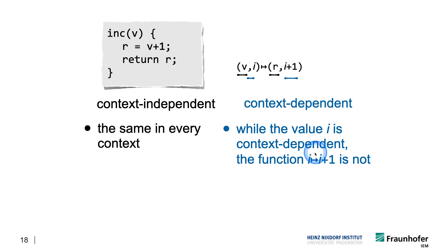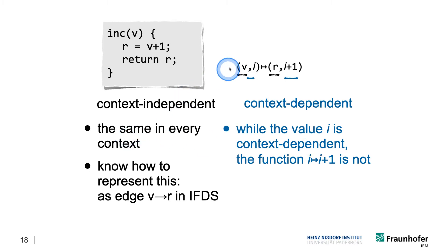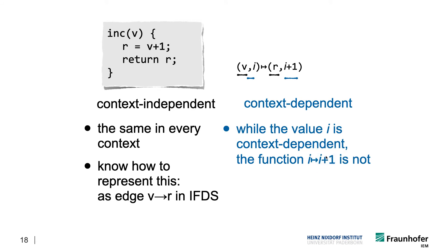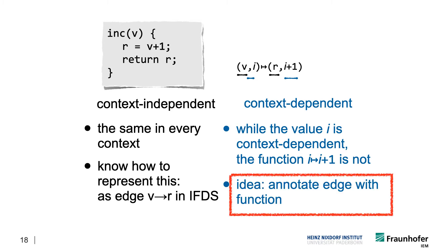Instead, we represent them using such a function representation — an intentional summary — that is a context independent representation. We already know how to represent the context independent parts. In IFDS, for instance, we would have an edge from V to R to represent that some value is flowing from V to R. The idea is now to represent how the context dependent value changes as an annotation to the particular edge, annotating this edge with a function.